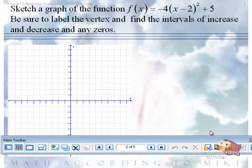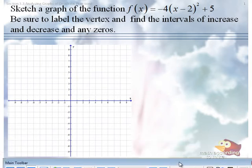Sketch a graph of the function f of x equals negative 4 times the quantity x minus 2 squared plus 5. There's no period there.